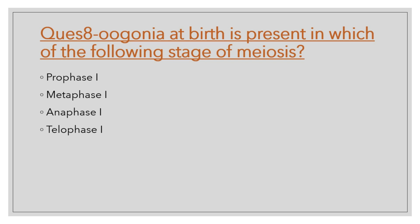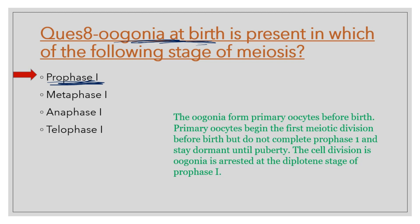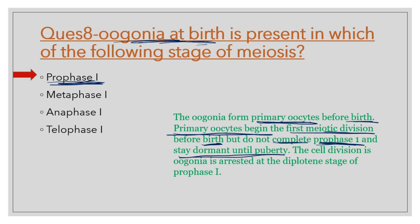Question number 8: Oogonia at birth is present in which state — Prophase I, Metaphase I, Anaphase I, or Telophase I? It is arrested in Prophase I. Oogonia forms a primary oocyte at birth, but this primary oocyte begins the first meiotic division before birth, in the intrauterine phase. It starts meiotic division but does not complete it, remaining in Prophase I, dormant until puberty — specifically arrested at the diplotene stage of Prophase I.